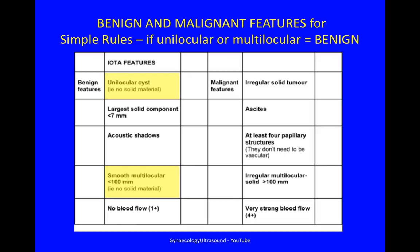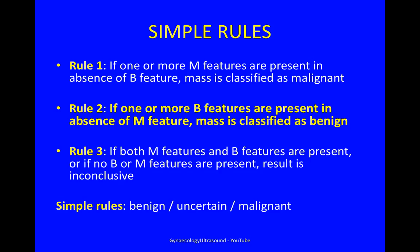If it's not immediately obvious what it is, you can often classify it using simple rules. If the cyst is unilocular with no solid material, or smooth multilocular less than 10 centimetres with no solid material, and in the absence of any malignant features, then the cyst will be benign. To remind you of the simple rules: if one or more benign features is present in the absence of malignant features, the mass is classified as benign.